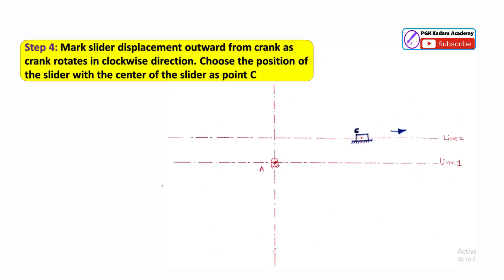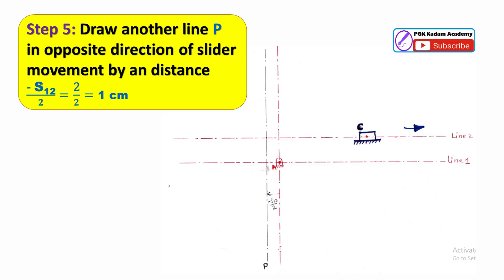Step 4: Mark the slider displacement outward from the crank as the crank rotates in the clockwise direction. Choose the position of the slider with the center of the slider as point C on line 2.